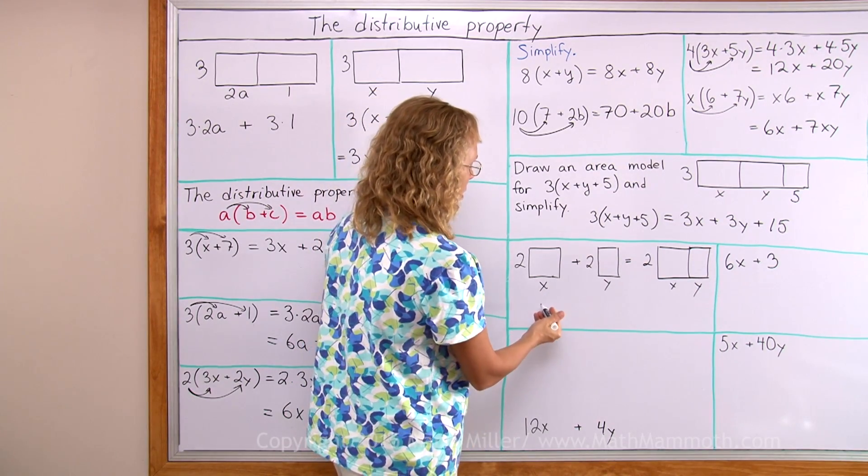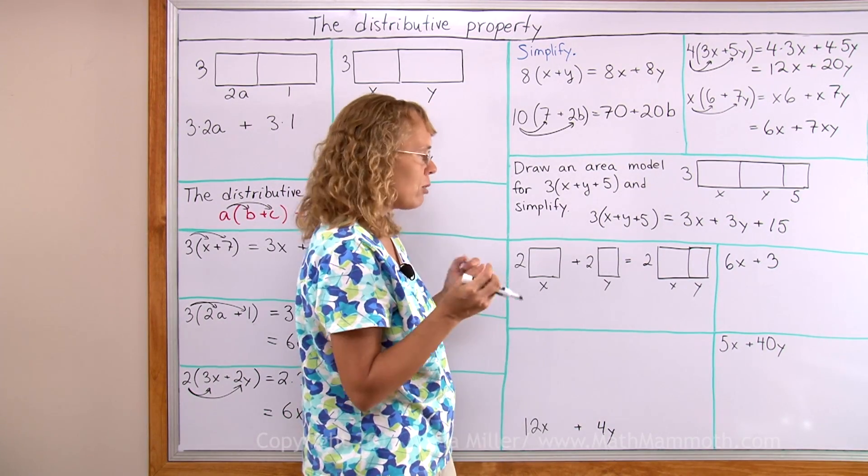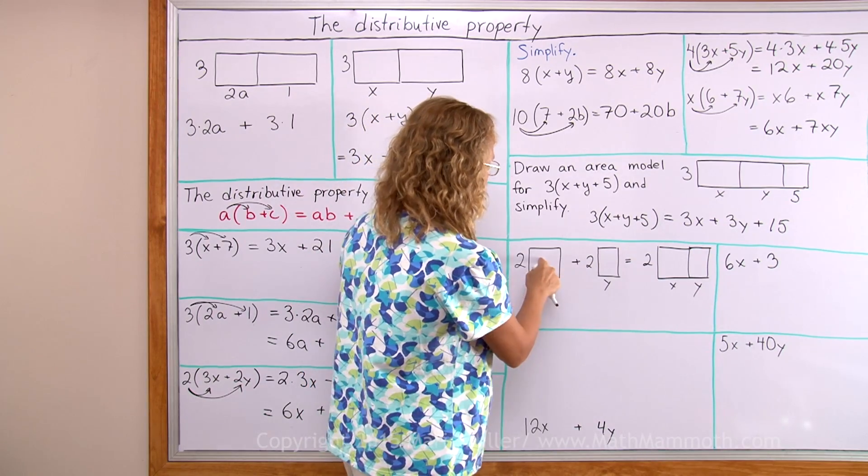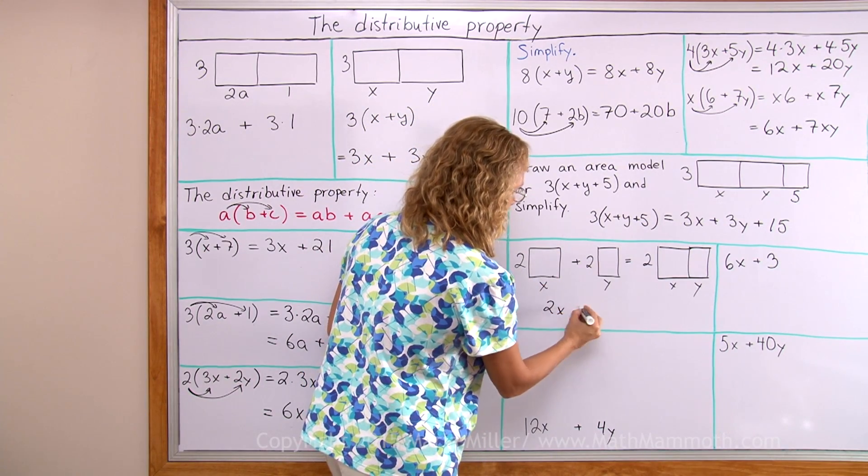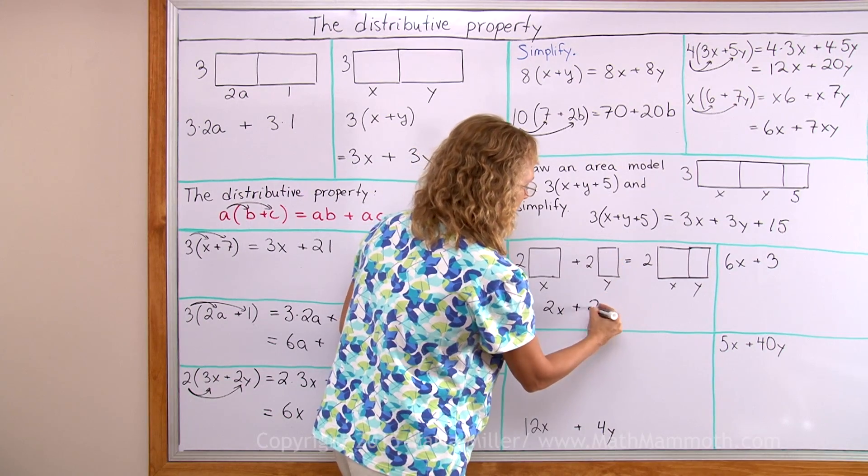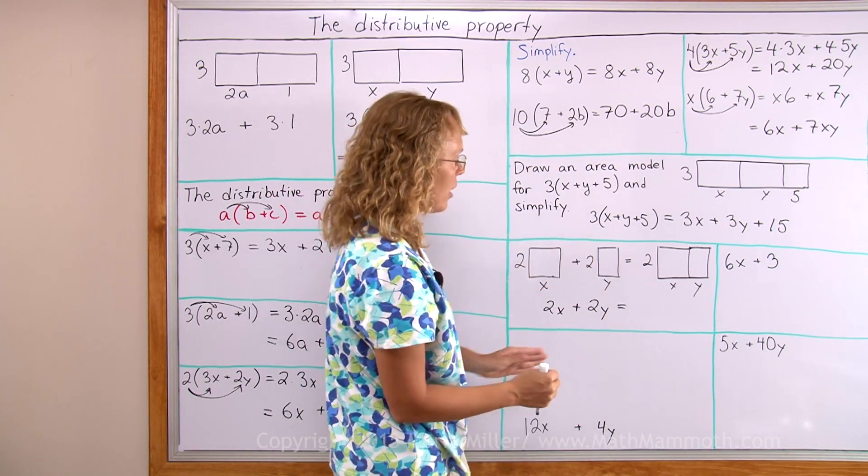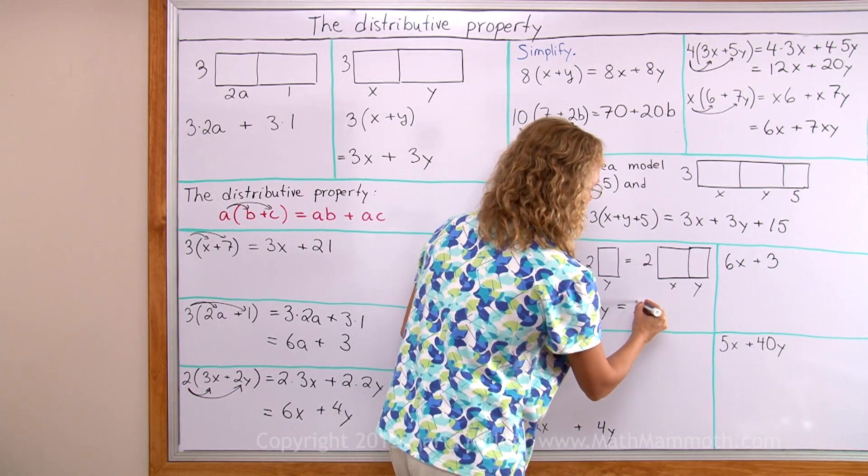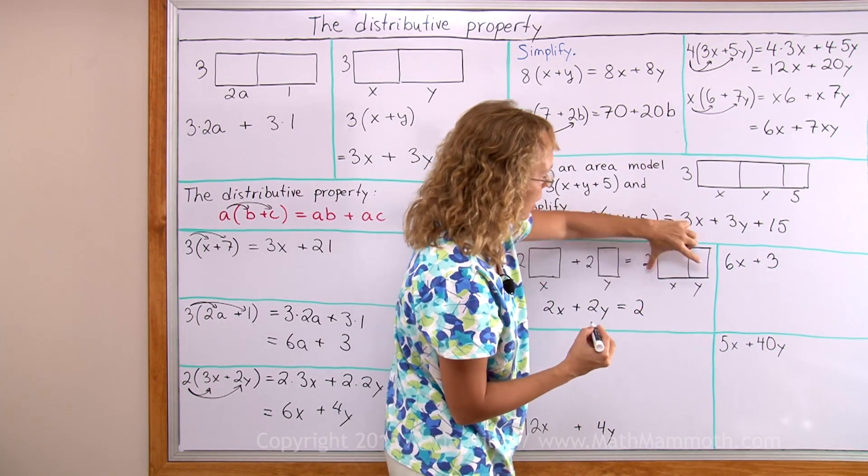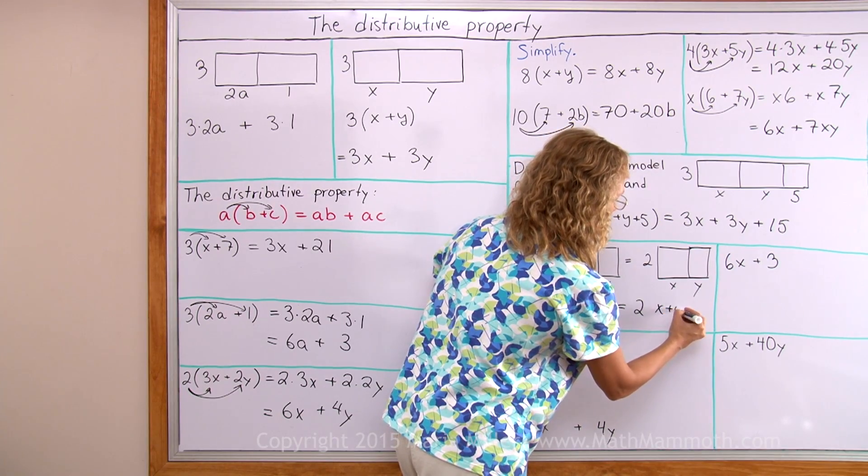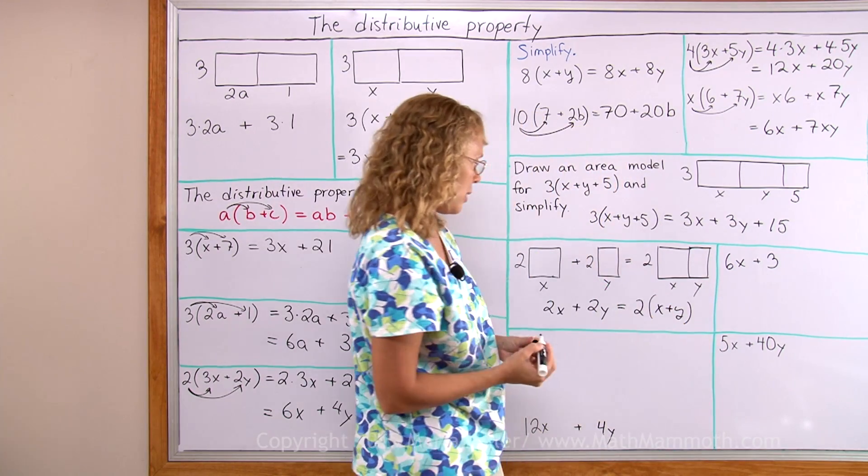As an expression, I will write the areas now. This all has to do with the area. The area of this is of course two times x, and then the area of that is two y. And if I join those together, I get a big rectangle where one side is two, the other side here is x plus y. I need to put that in parenthesis.